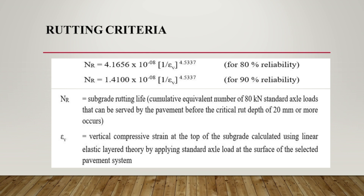In the rutting criteria, EV, i.e. the permissible vertical strain, is calculated where NR is the cumulative traffic in MSA, i.e. millions of standard axles, before the maximum value of allowable rut of 20 mm is attained. In case of fatigue, it is 20% of the paved area. Two equations are provided for 80% and 90% reliability, of which 90% reliability is commonly used for designed traffic greater than or equal to 20 MSA.